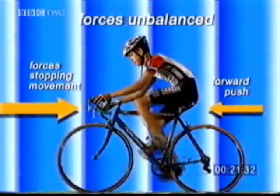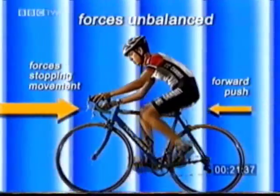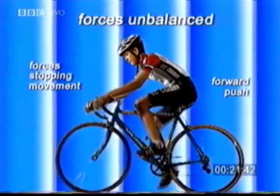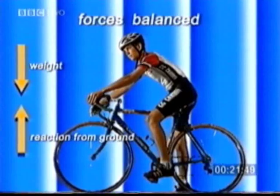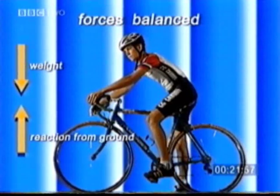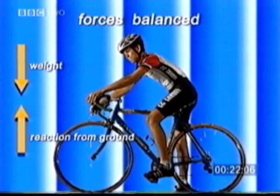If the cyclist reduces the forward push, the forces become unbalanced again and the bike slows down. When an object is stationary, the forces acting on it are balanced again. Here, another set of balanced forces are the weight of the bike and cyclist, balanced with an equal upward force preventing them from sinking into the ground. Remember, the words balanced or unbalanced have nothing to do with the way we balance on a bike — they refer to the forces that act on all objects.